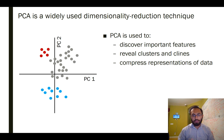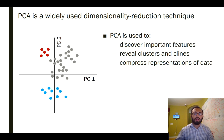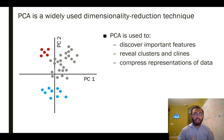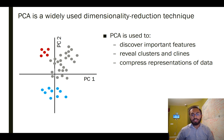PCA is very useful. It helps us discover important features within the data, or linear combinations of features. It helps us discover clusters in the data, because we're bringing the data down to two or three dimensions so we can easily see clusters of data points, or gradual trends within the data. And in some cases, it helps us understand how to compress the data efficiently.